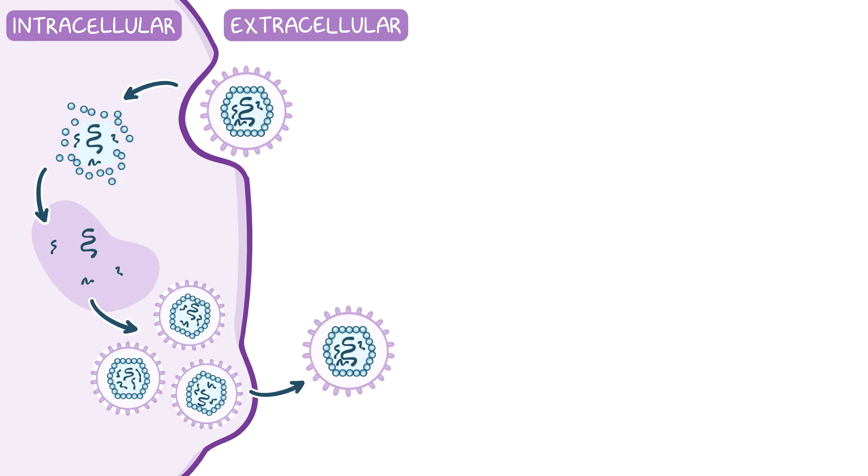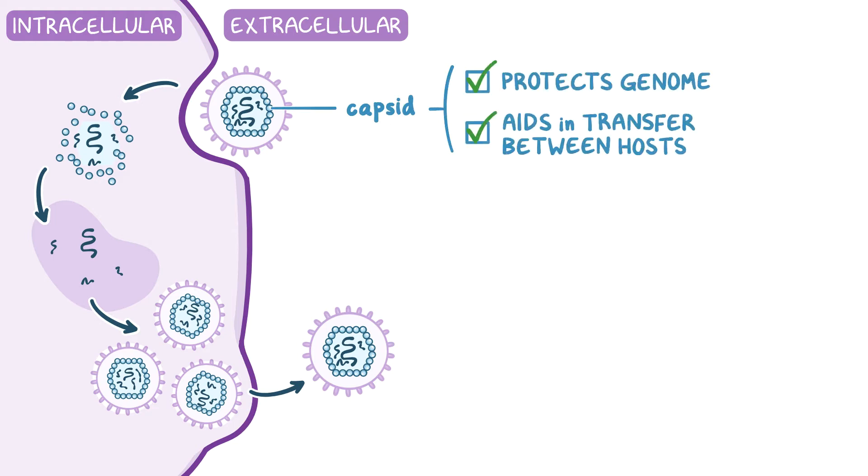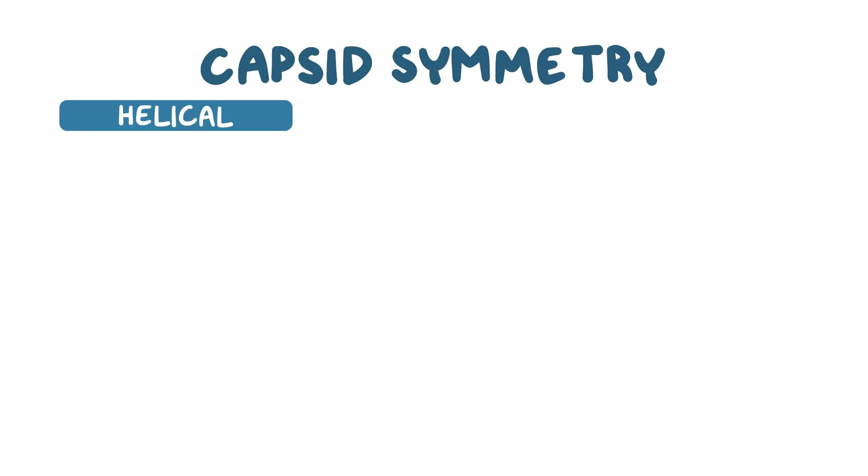Now the viruses are surrounded by an outer protein coating called a capsid, which protects the viral genome and aids in its transfer between host cells. According to their capsid symmetry, the viruses can come in many shapes and sizes. There are three types of shapes: helical, icosahedral, and complex.